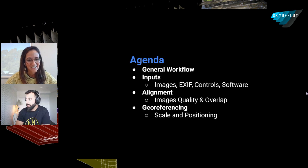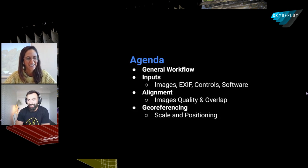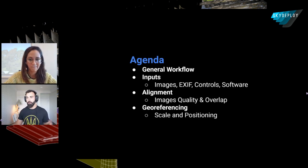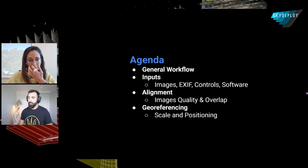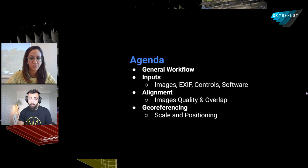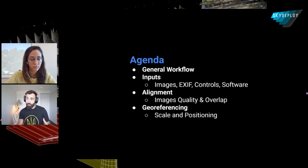Let's jump in. I made a little agenda so we have some structure — not as many slides this time, we're going to freestyle it a little. We'll start with a general workflow concept. We talk about different deliverables: AutoCAD drawings, point clouds, 3D meshes — they all come at different stages. Then we dive into the inputs: our images, EXIF data within those images, our controls or scale constraints for geo-referencing, and our software.